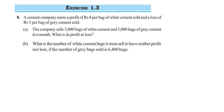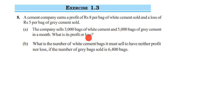This is a question from Exercise 1.3, 8th question, Chapter Integers of Class 7. A cement company earns a profit of rupees 8 per bag of white cement sold and a loss of rupees 5 per bag of grey cement sold. There are two questions to answer. The first one: the company sells 3,000 bags of white cement and 5,000 bags of grey cement in a month — what is its profit or loss?